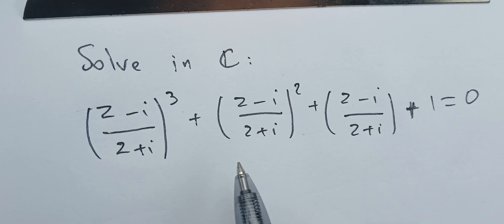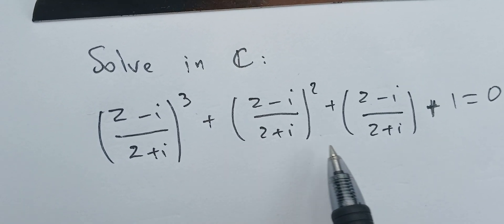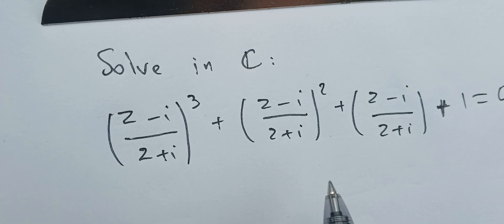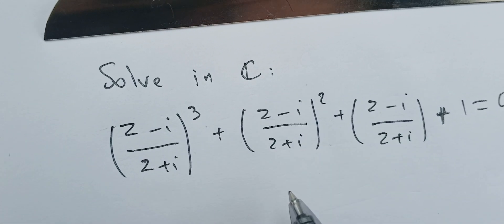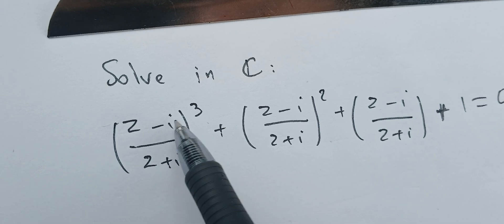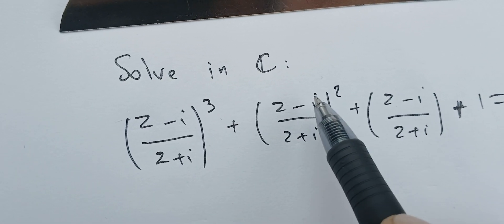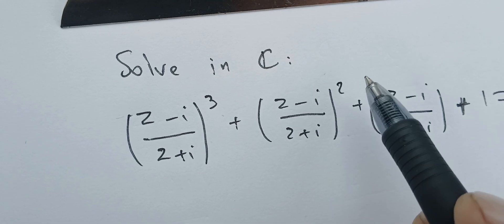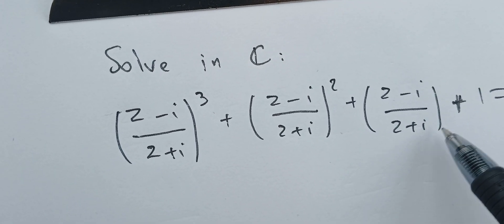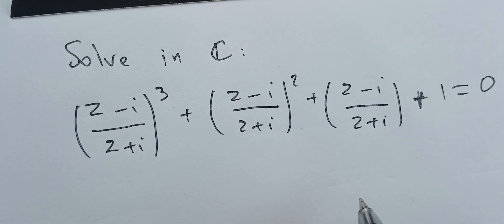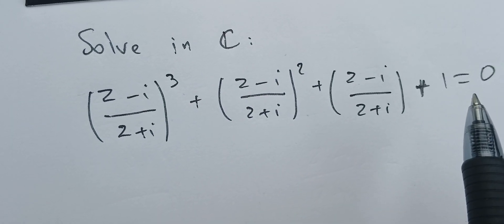Welcome back. In this video we're going to try to solve this equation in the set of complex numbers. We have the expression (z minus i) over (z plus i) cubed, plus (z minus i) over (z plus i) squared, plus (z minus i) over (z plus i), plus one equals zero.